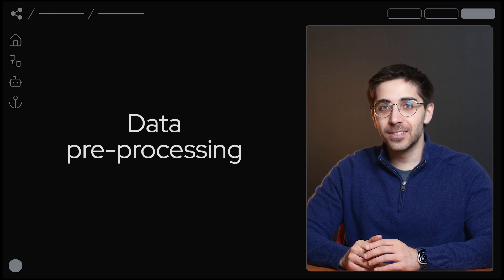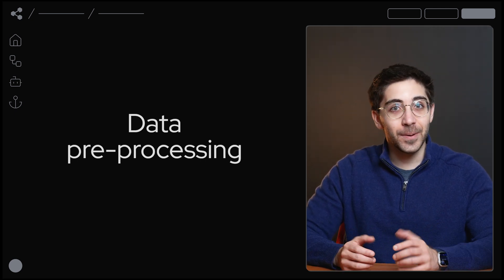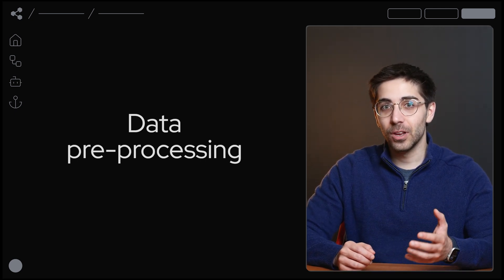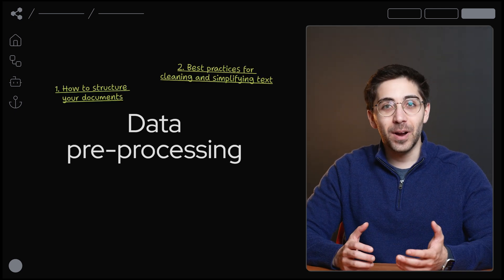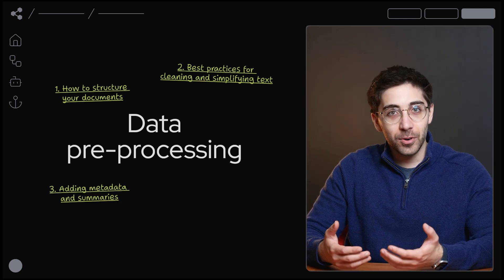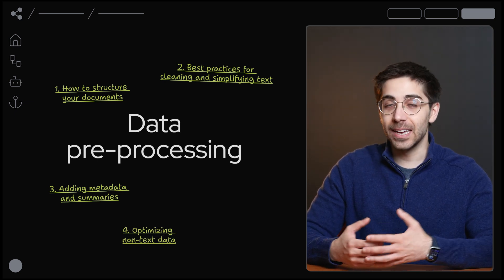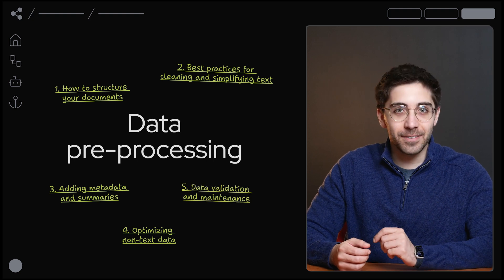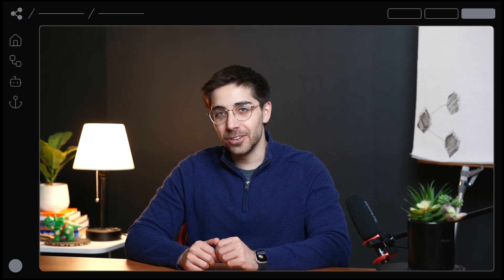In this series, we'll guide you through everything you need to know to get your files and your data ready for RAG. We'll cover how to structure your documents for clarity, best practices for cleaning and simplifying text, adding metadata and summaries for richer content, optimizing non-text data like images and tables, and data validation and maintenance. Each video will break down these steps with examples, giving you actionable insights to apply directly to your AI projects.